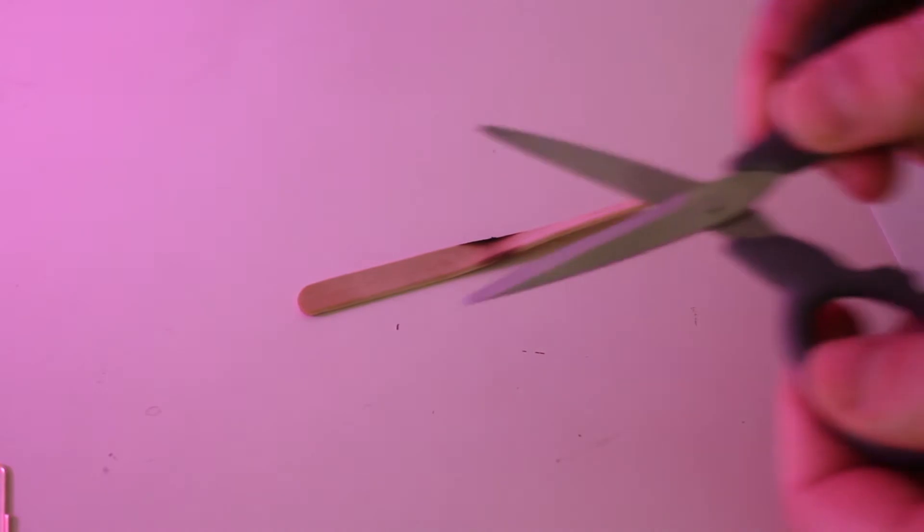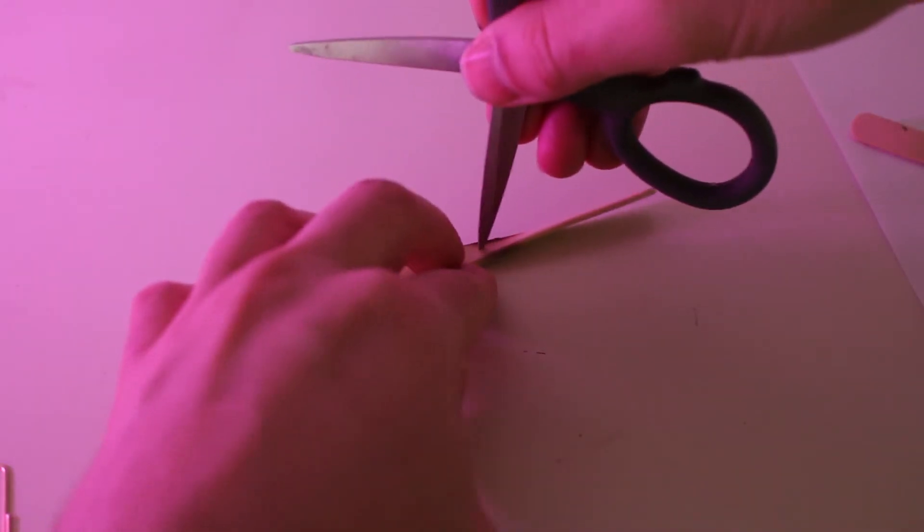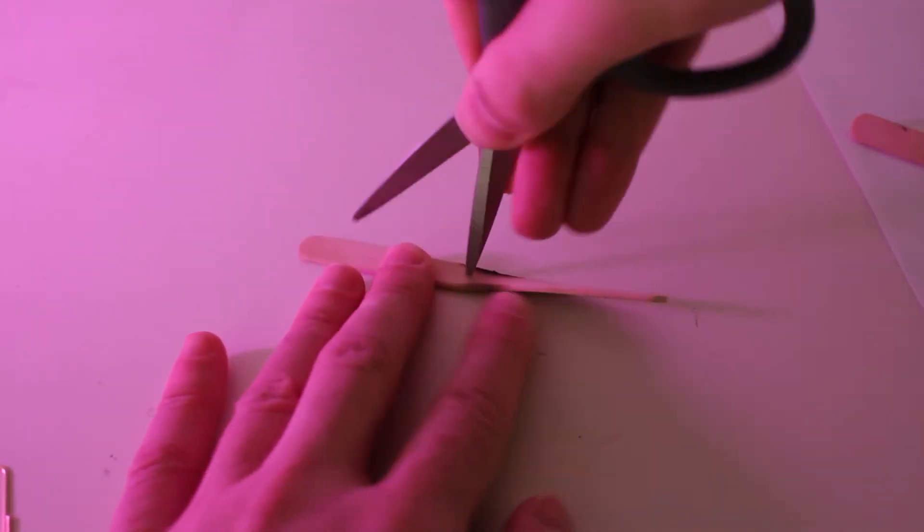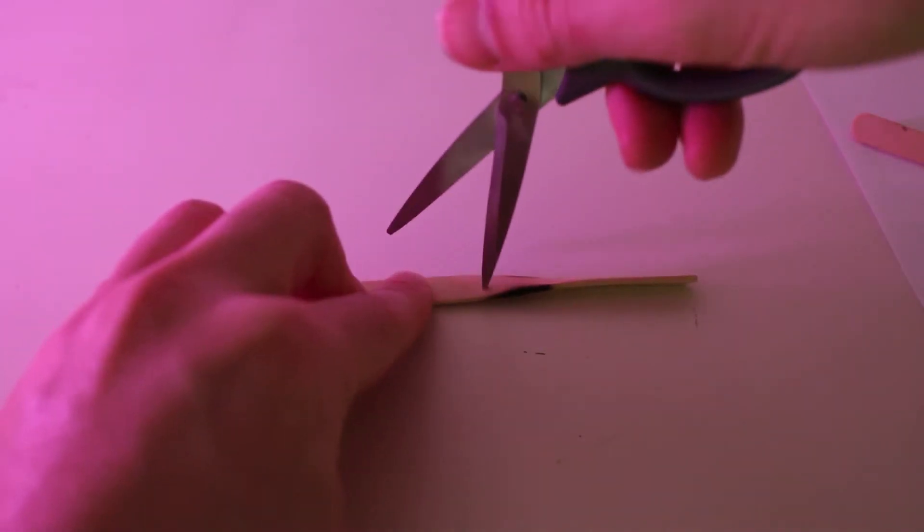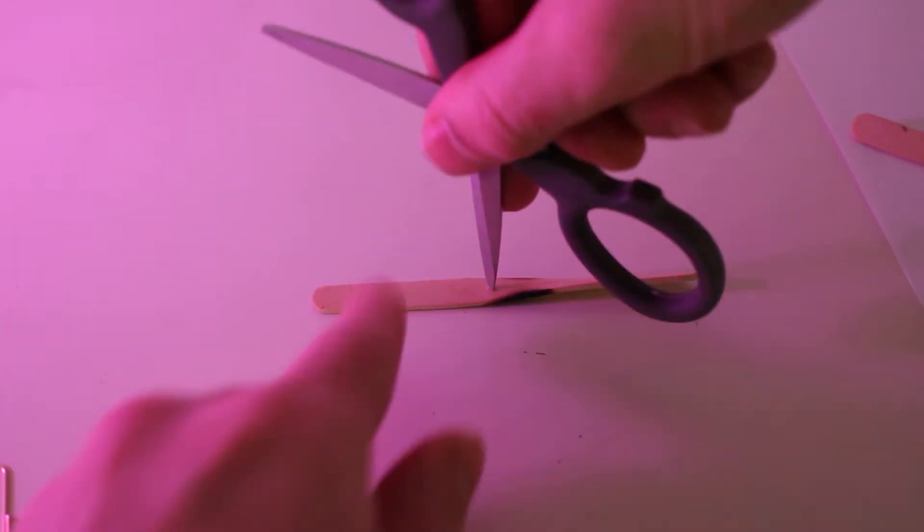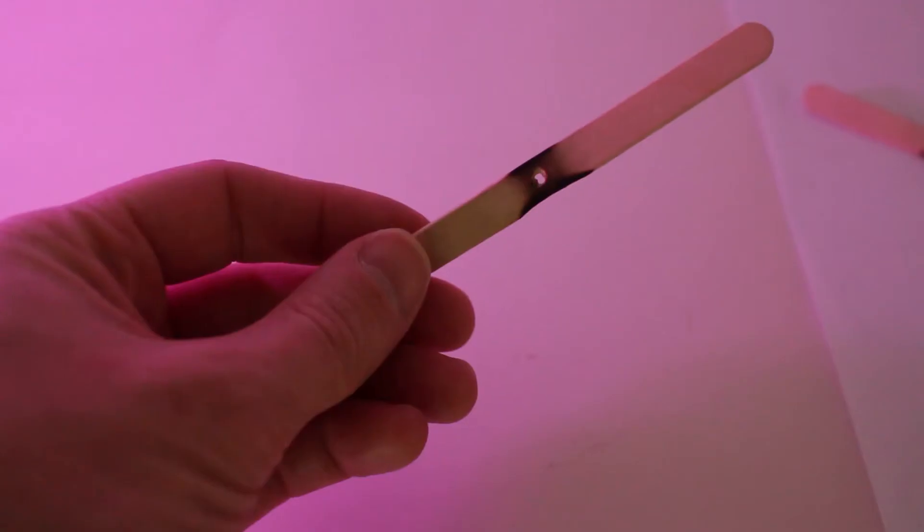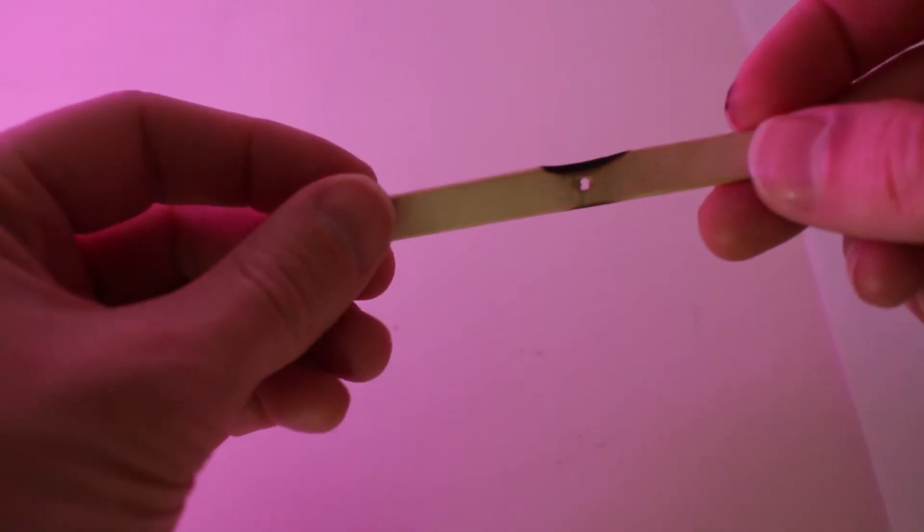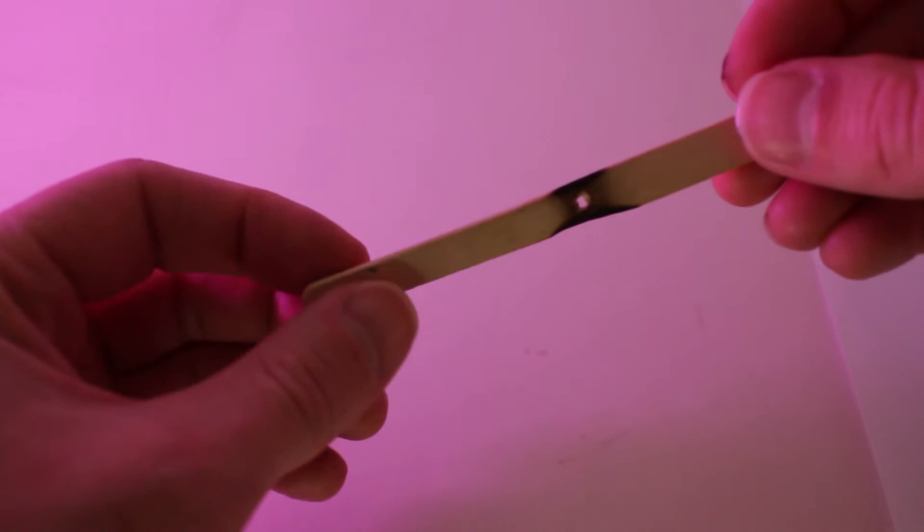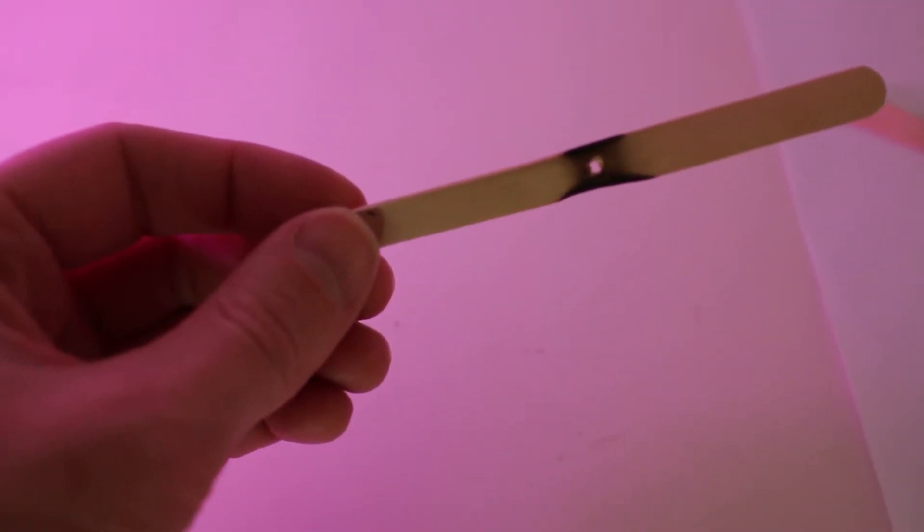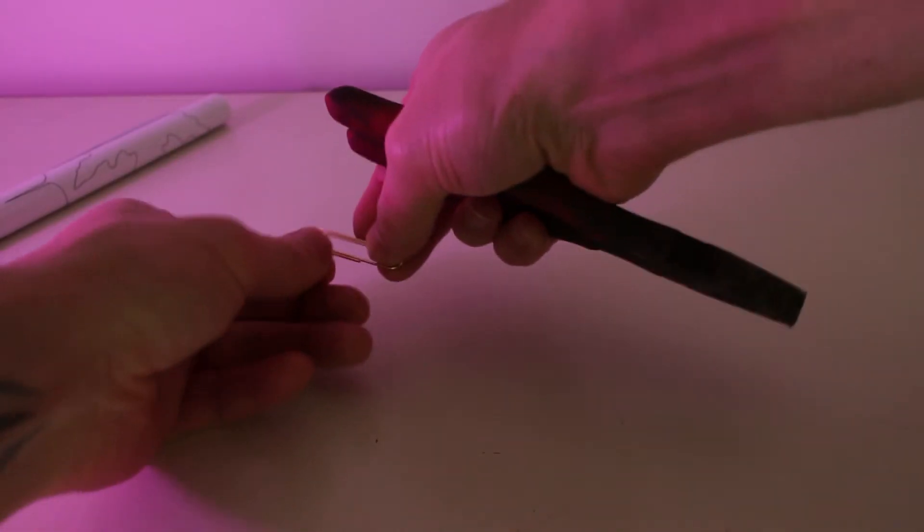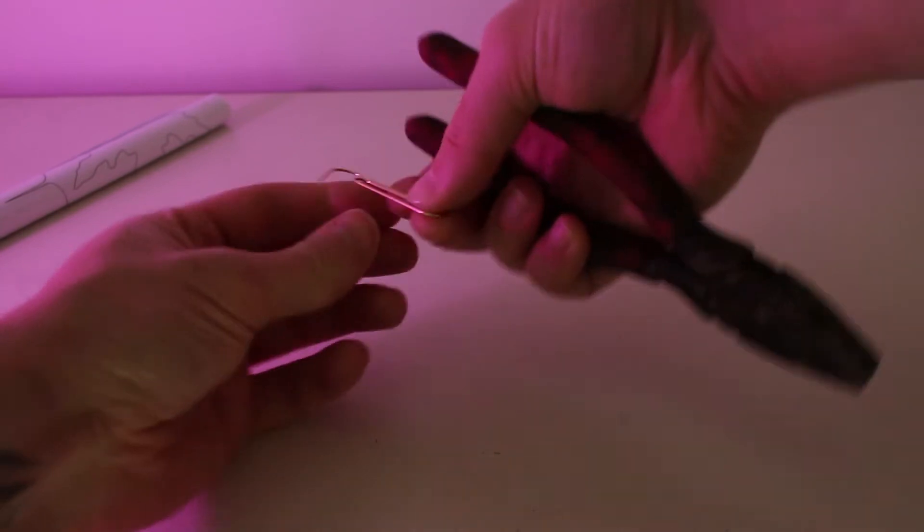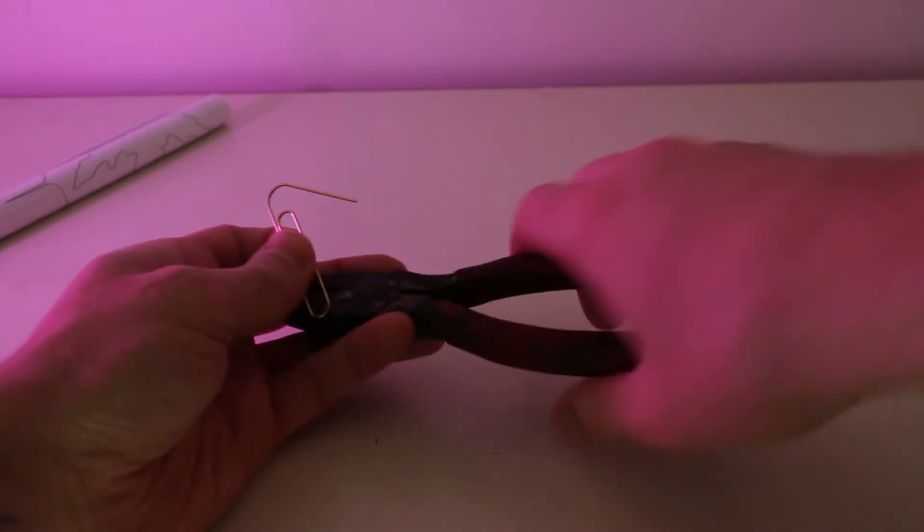Use a pair of scissors or a sharp object to put a hole in the middle of the propeller. Now we need to trim down the paper clip so we can fit it through the propeller hole. Use a pair of pliers to do this.